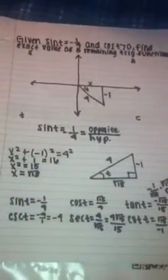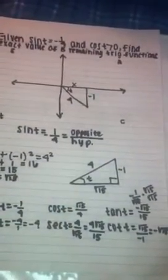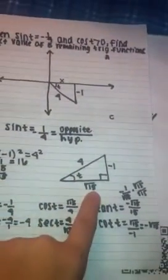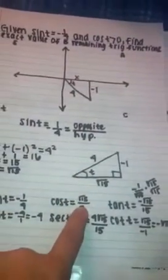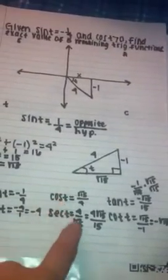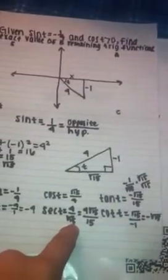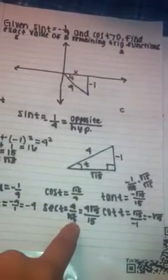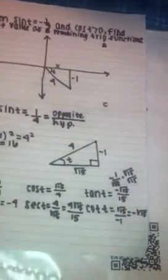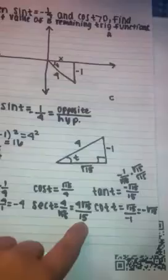The cosine of t is the adjacent over the hypotenuse. The adjacent side to t is square root of 15 and the hypotenuse is 4, so cosine of t equals square root of 15 over 4. The secant of t is the reciprocal of cosine, giving 4 over square root of 15. Since we cannot have a radical in the denominator, we multiply top and bottom by square root of 15 to get 4 square root of 15 over 15.